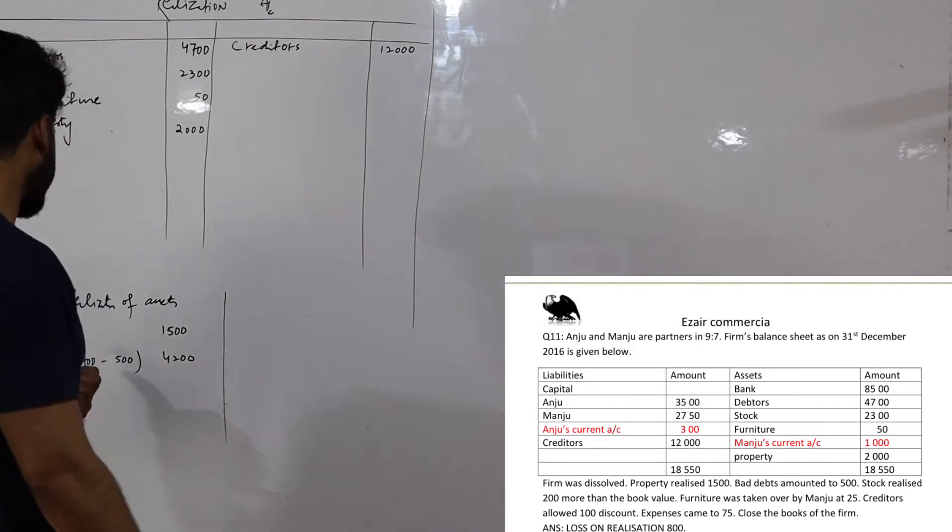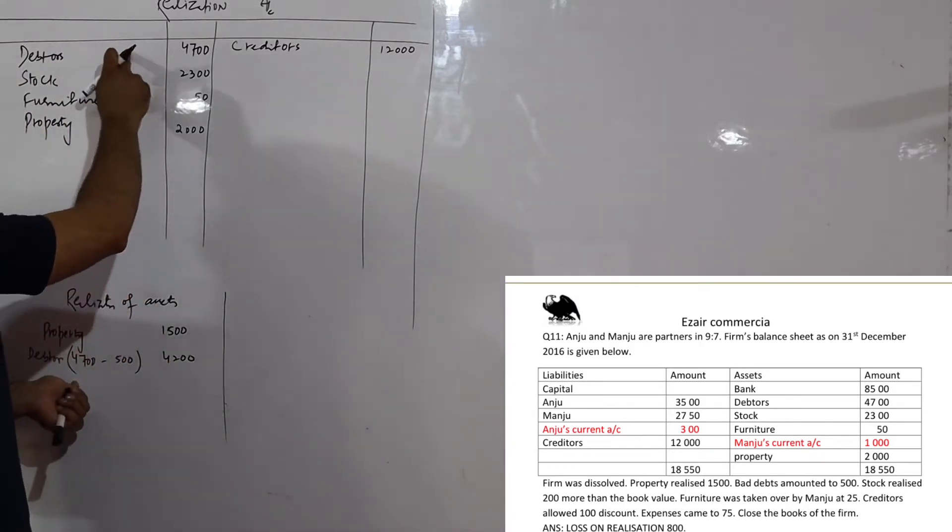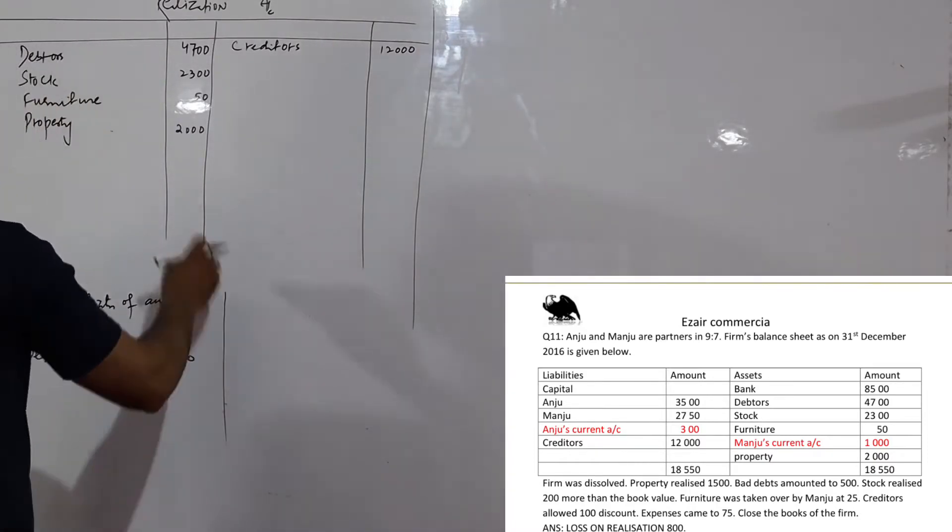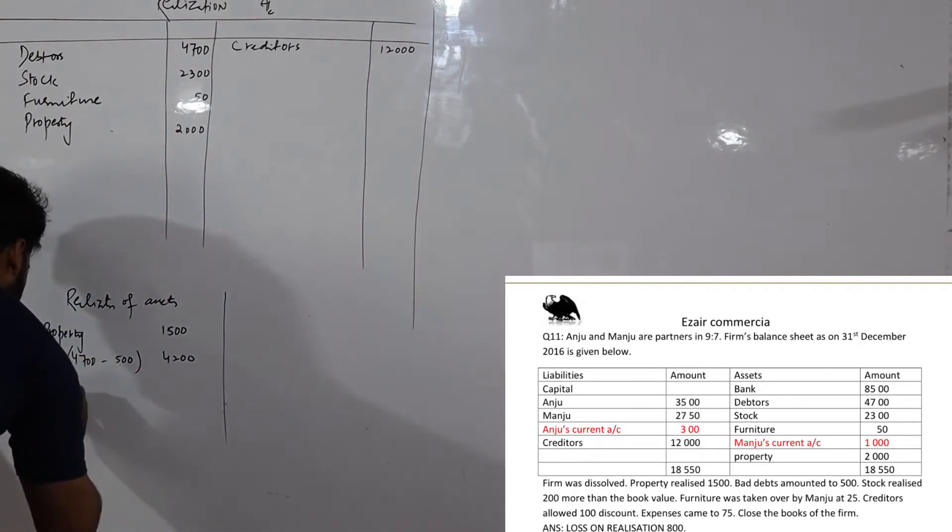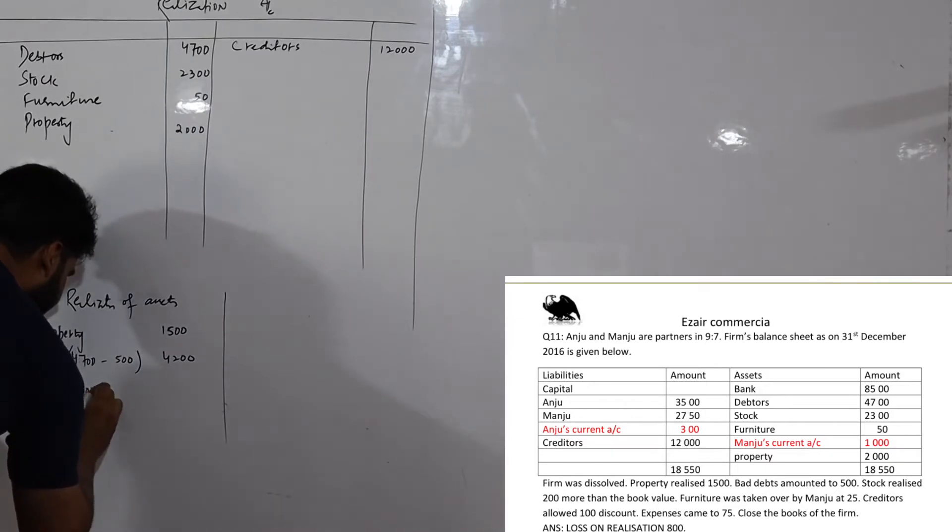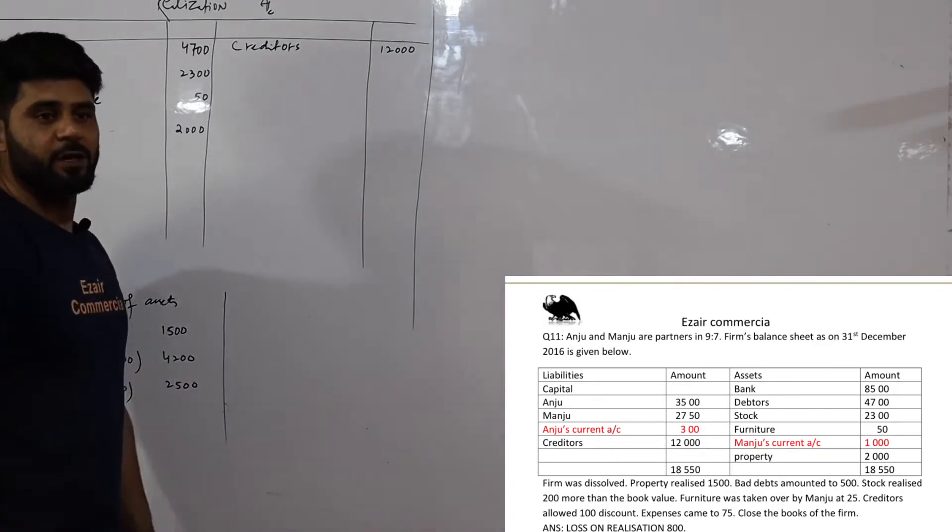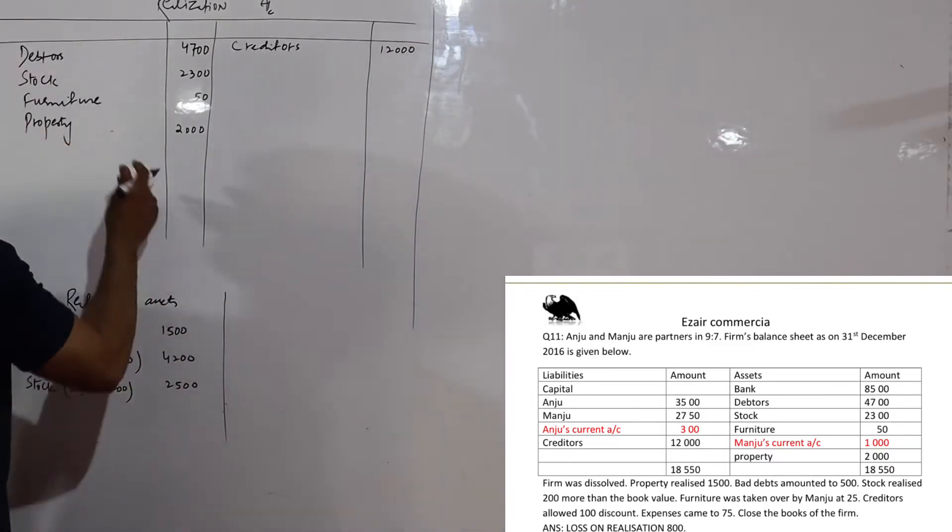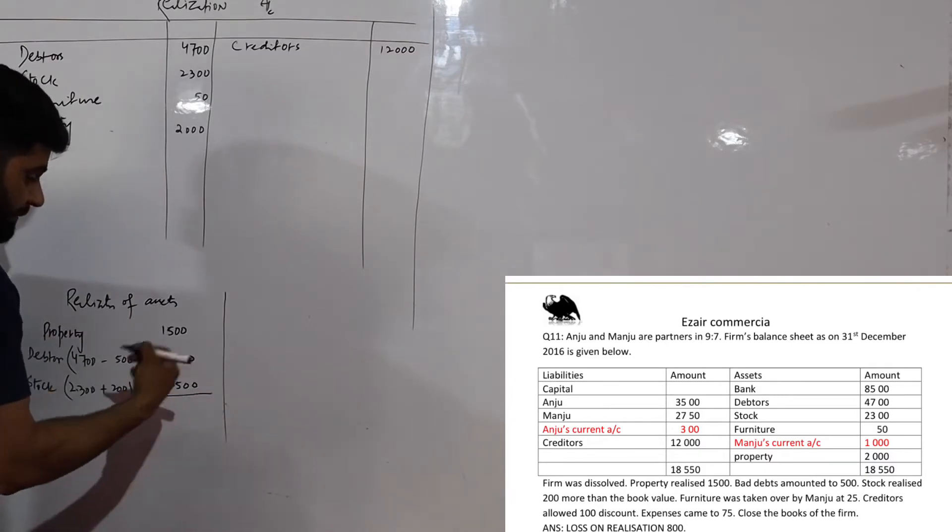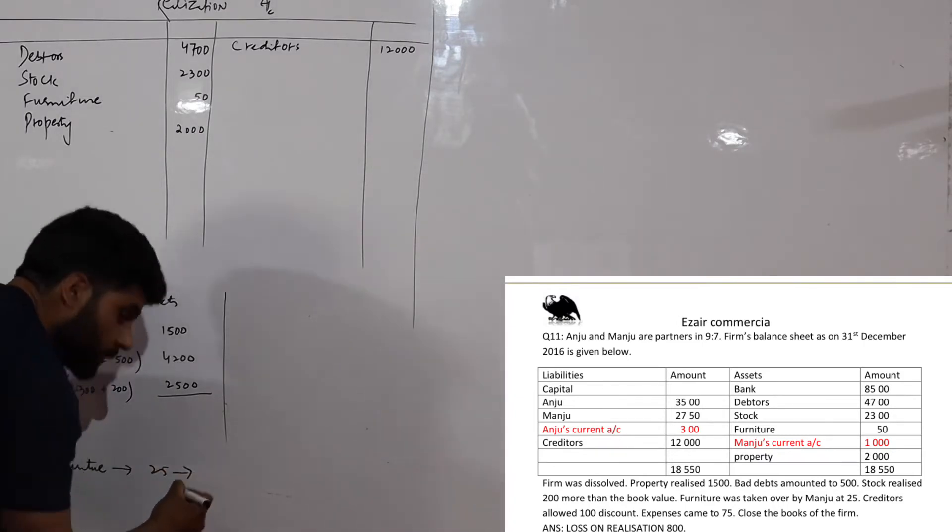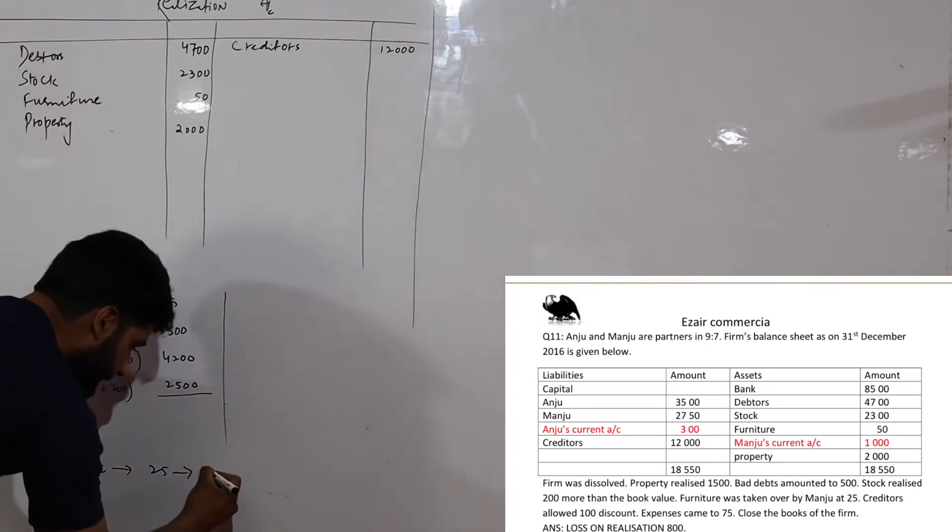So debtor's value was 4700. If they did not give us 500, then how much did they give? 4200. And after that, the stock book value is 2300. It realized 2300 less than 200, which equals 2500. Then, furniture - we are not selling furniture to outsiders. Minju is taking furniture. Furniture realized 25. Who is taking it? Manju is taking furniture.